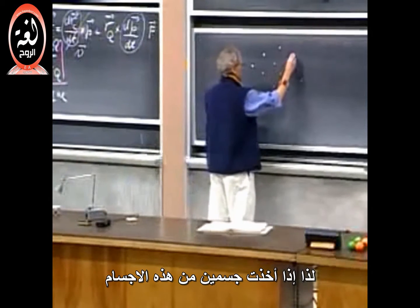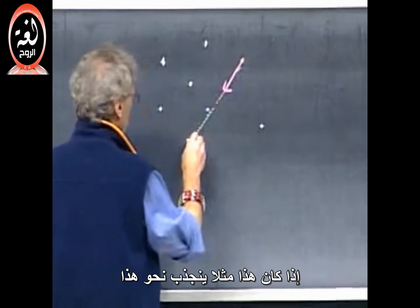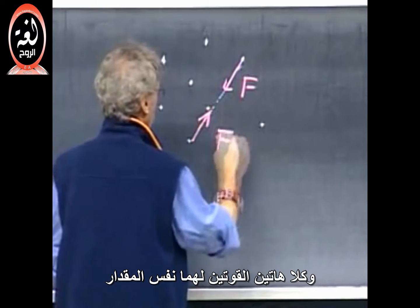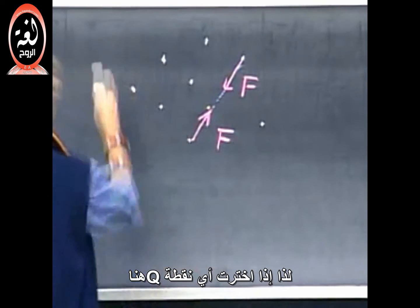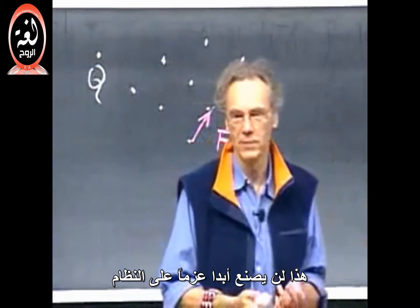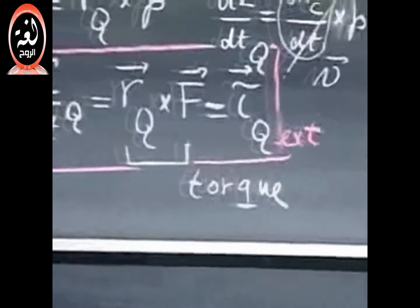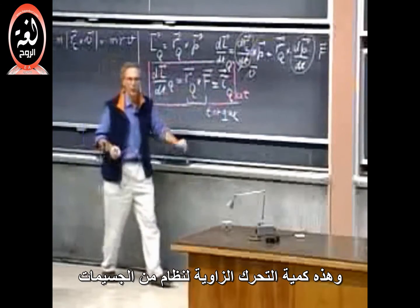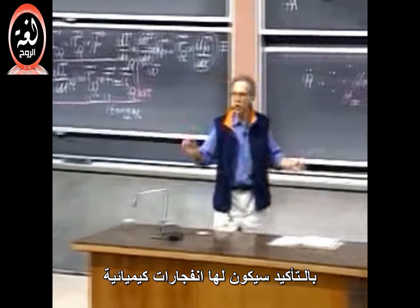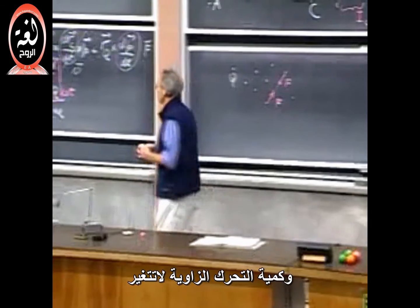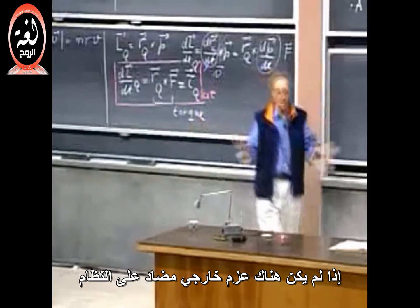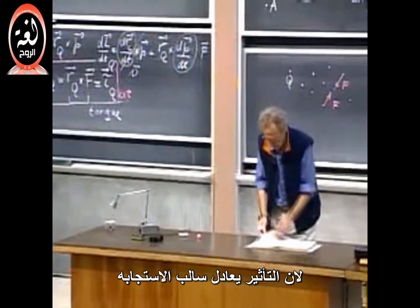If I take two of these objects, and this one is attracted towards that one, then action equals minus reaction, so these two forces are identical in magnitude. If I take any point Q, no matter where you choose it, that will never put a torque on that system because the two forces cancel each other out. So now we get the full conservation of angular momentum — if only we add one little word: external. The angular momentum will not change if there is no net external torque on that system, because all the internal torques cancel out because action equals minus reaction.